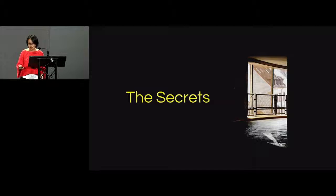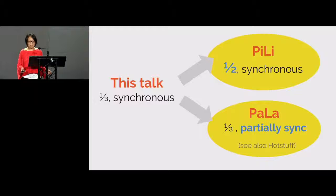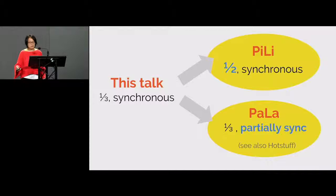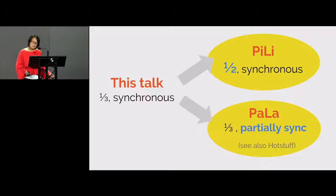Now it's time to reveal a couple of secrets. What I described tolerates less than one-third corruption in the synchronous model. Pili improves the resilience parameter to a half, still in the synchronous model, because one-third is not tight for synchrony. Pala tries to improve robustness in a different dimension — tolerating arbitrary partitions by working in the partially synchronous model. I also want to mention another beautiful work called HotStuff by Abraham et al., also in the partially synchronous model. The protocol I described in this talk is partly inspired by the beautiful HotStuff work.